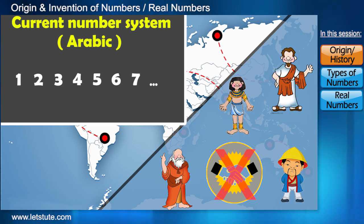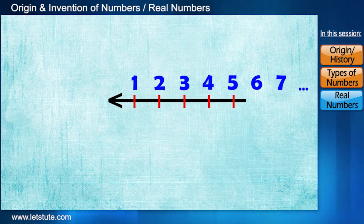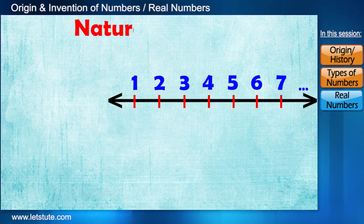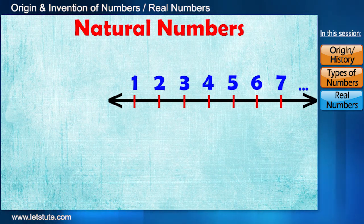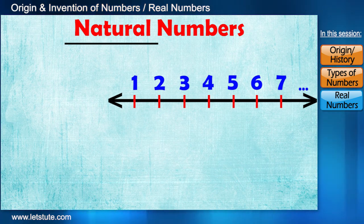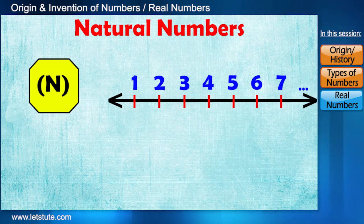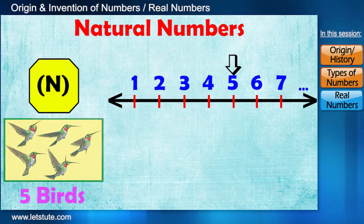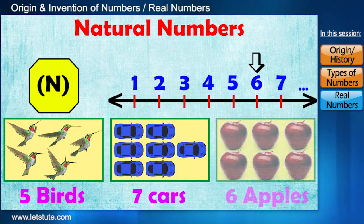Today we represent these numbers on a line which are called natural numbers. We call them natural maybe because they came naturally when we started to learn counting. Set of natural numbers are denoted by the letter N, and by this set we are now able to say that there are five birds, seven cars, or say six apples.